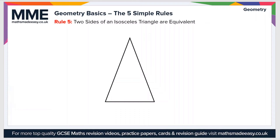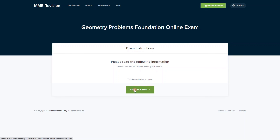The final rule is that two sides of an isosceles triangle are equivalent. An isosceles triangle is defined as a triangle with two equivalent sides, which we label accordingly. The effect of this is that the two base angles are also equivalent — let's call them both x — and the other angle we can call y.